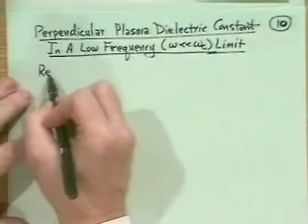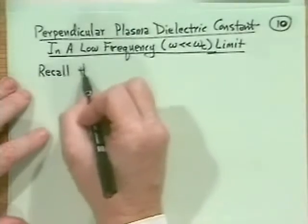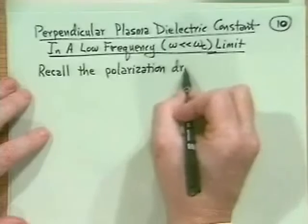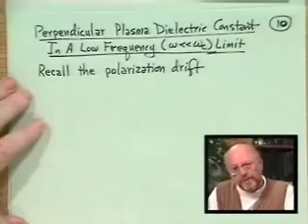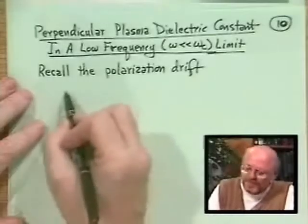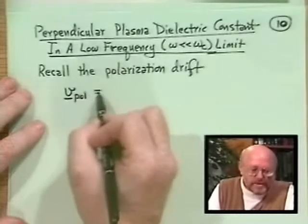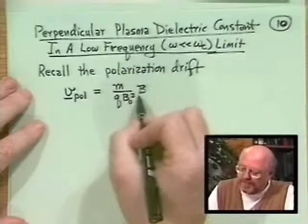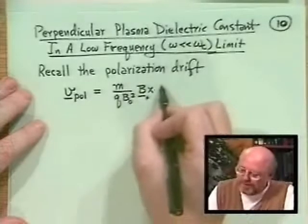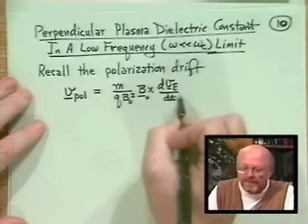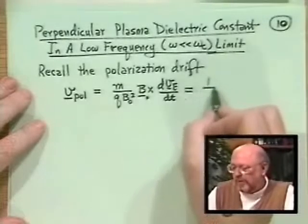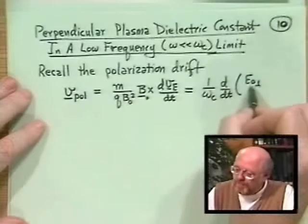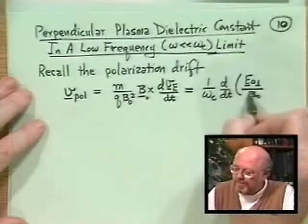To do this, we need to recall the polarization drift. And remember, the polarization drift was due to an oscillating E cross B velocity. So the polarization drift was equal to m over qB₀² times B₀ cross dv(E cross B drift) dt. Or we wrote it 1 over the cyclotron frequency, d by dt, of E₀ perpendicular divided by B₀ scalar magnitude.